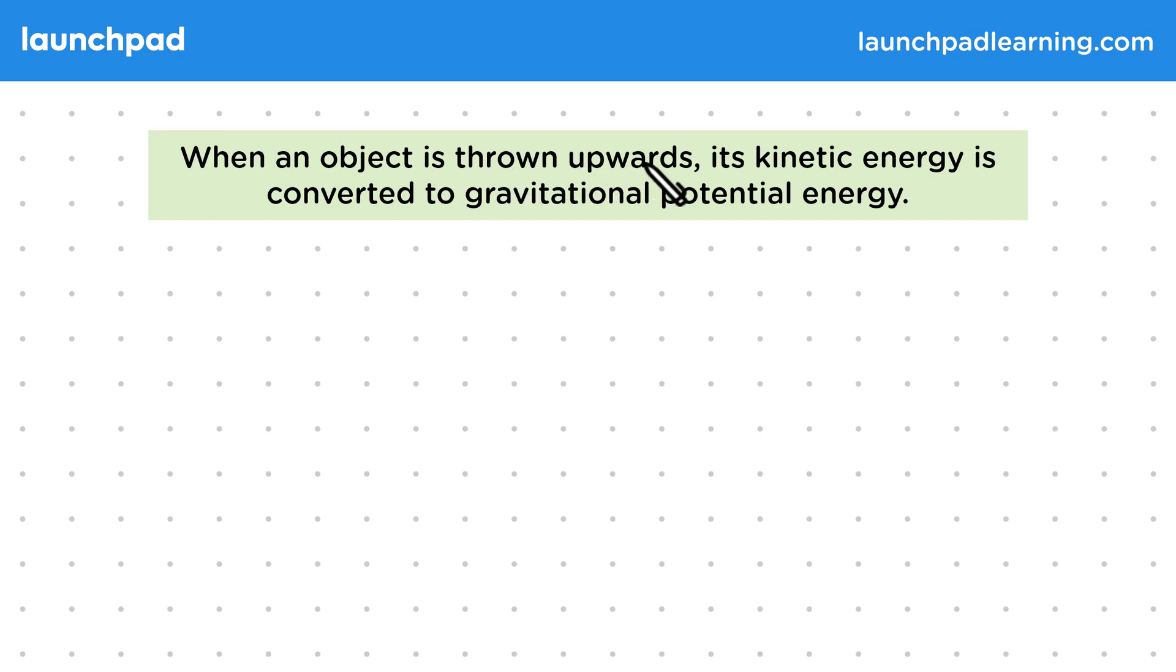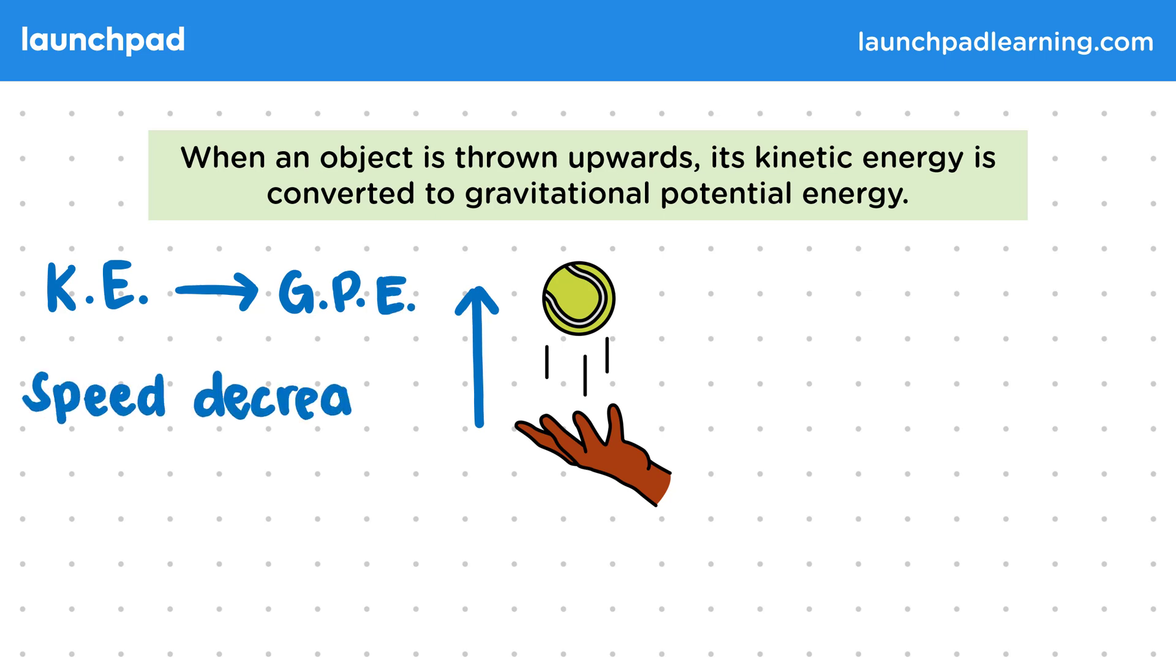When an object is thrown upwards, its kinetic energy is converted to gravitational potential energy. For example, when throwing a ball in the air, when the ball gains height, work is done against gravity as kinetic energy is converted to gravitational potential energy. The ball loses speed and also gains height. Remember that KE is kinetic energy and GPE is gravitational potential energy.